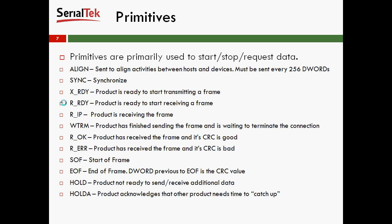Primitives are primarily used to start, stop, and request data, and maybe changes in link state. Aligns are going to be your most popular primitives for both SAS and SATA. This is sent to align activities between host and device — essentially align the clocks. They must be sent every 256 D-Words, so that can occur quite often, especially at higher speed rates. Sync is for synchronizing. X-Ready means that the product is ready to start transmitting a frame. R-Ready means that the product is ready to start receiving a frame.